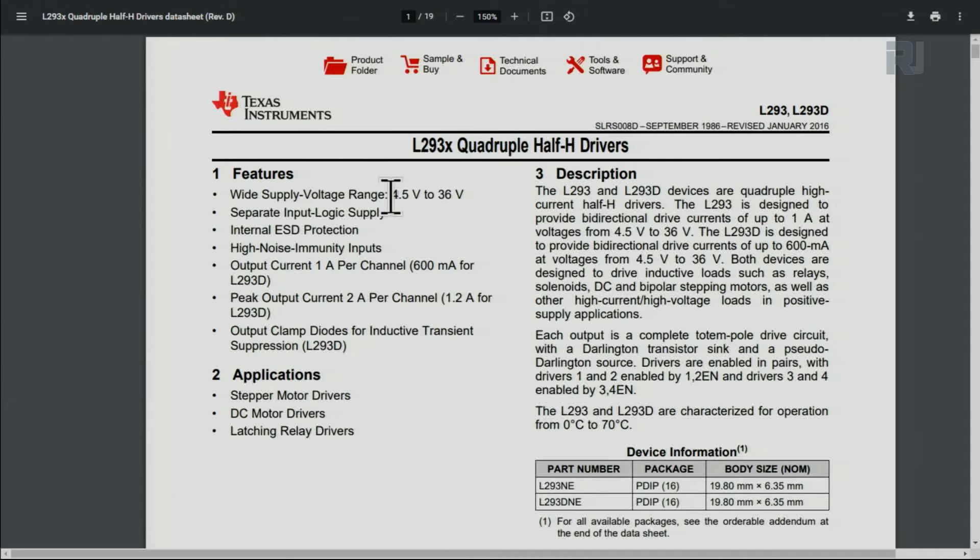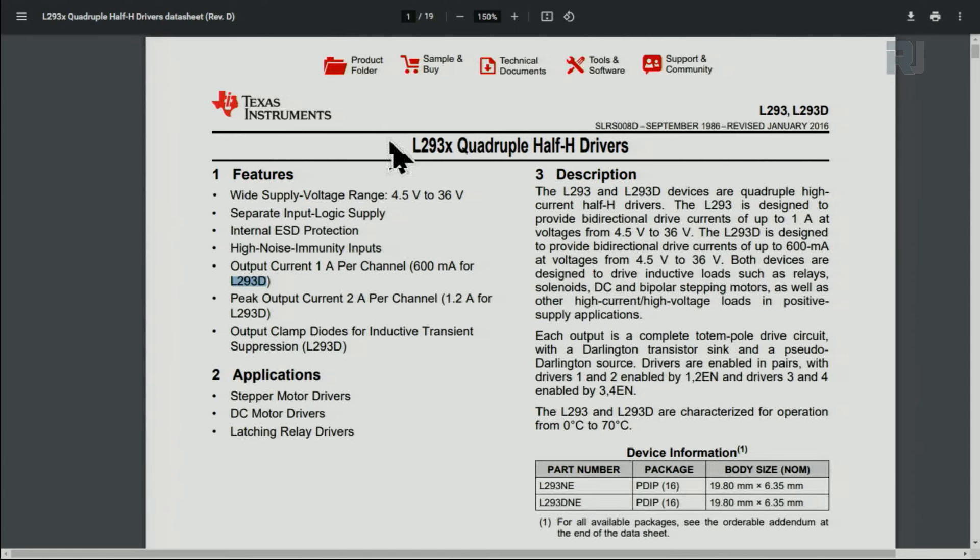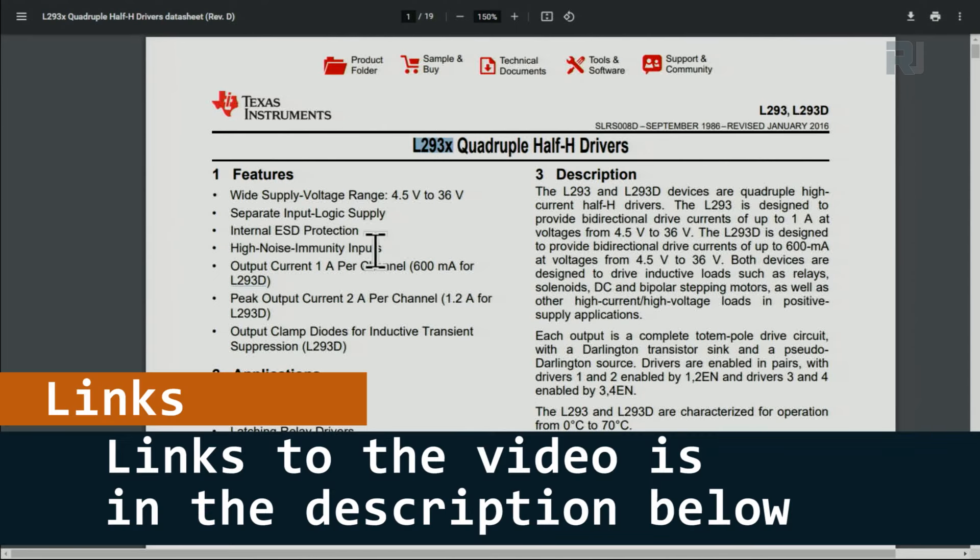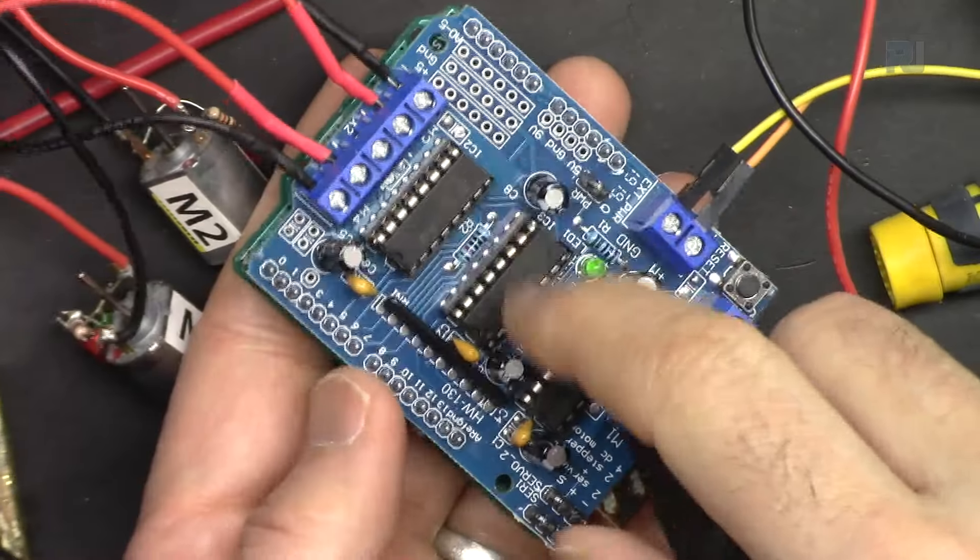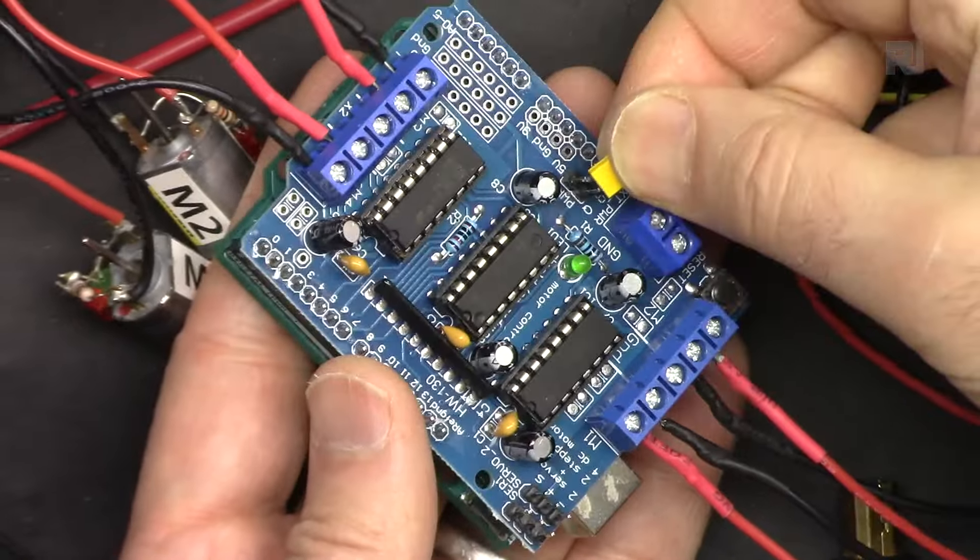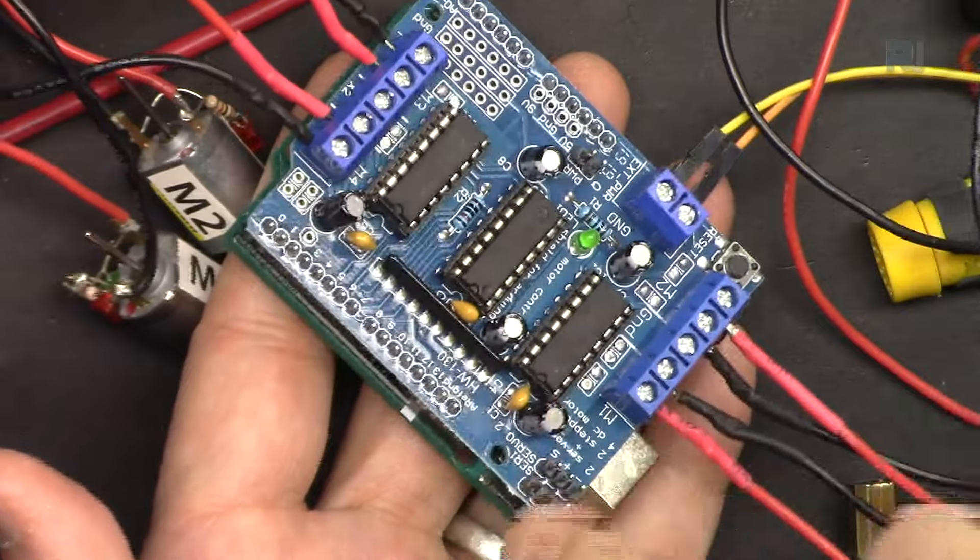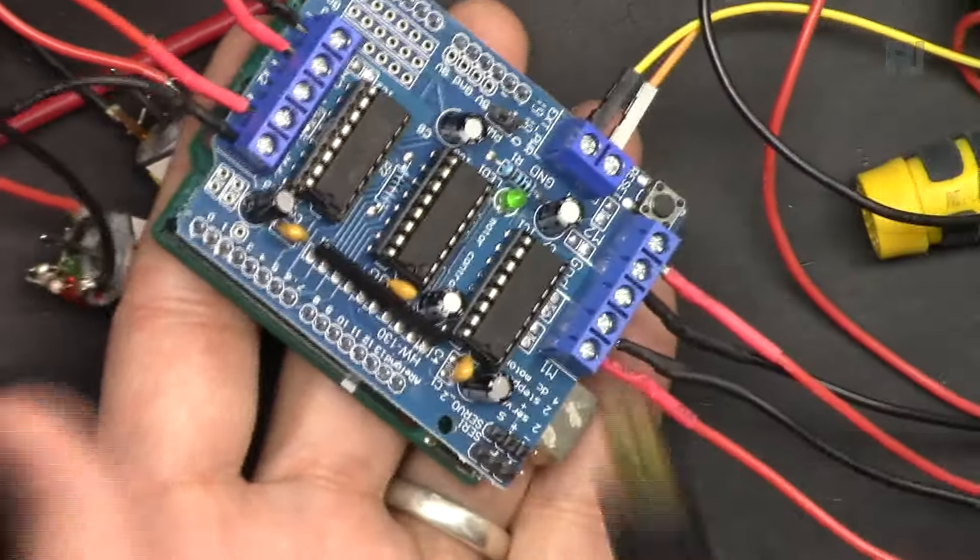And it can work with 4.5 up to 36 volts and 600 milliamperes per channel for L293D. So the maximum current is 600 milliamperes. A separate video explained this fully so I'm not going to spend any time on explaining the chip here. You're programming your Arduino, you will plug this in and make sure that this is removed. In this case the Arduino will be powered via USB.